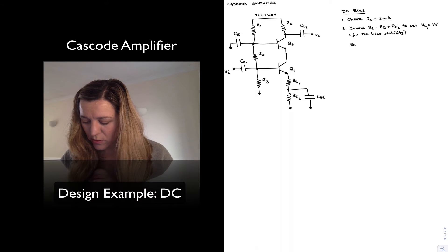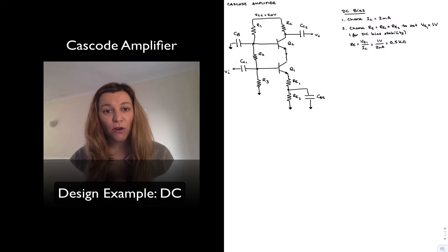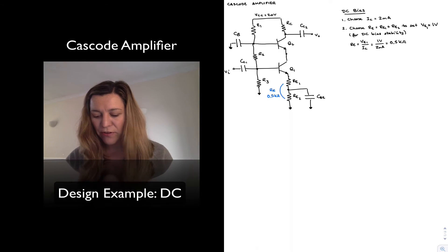So my RE is going to be equal to VE1 divided by IC, or 1 volt divided by 2 milliamps, which is 0.5 kilo-ohms. And again, that is the series combination of RE1 and RE2. So what I know so far is that RE, the sum of those two resistances, should be 0.5 kilo-ohms.